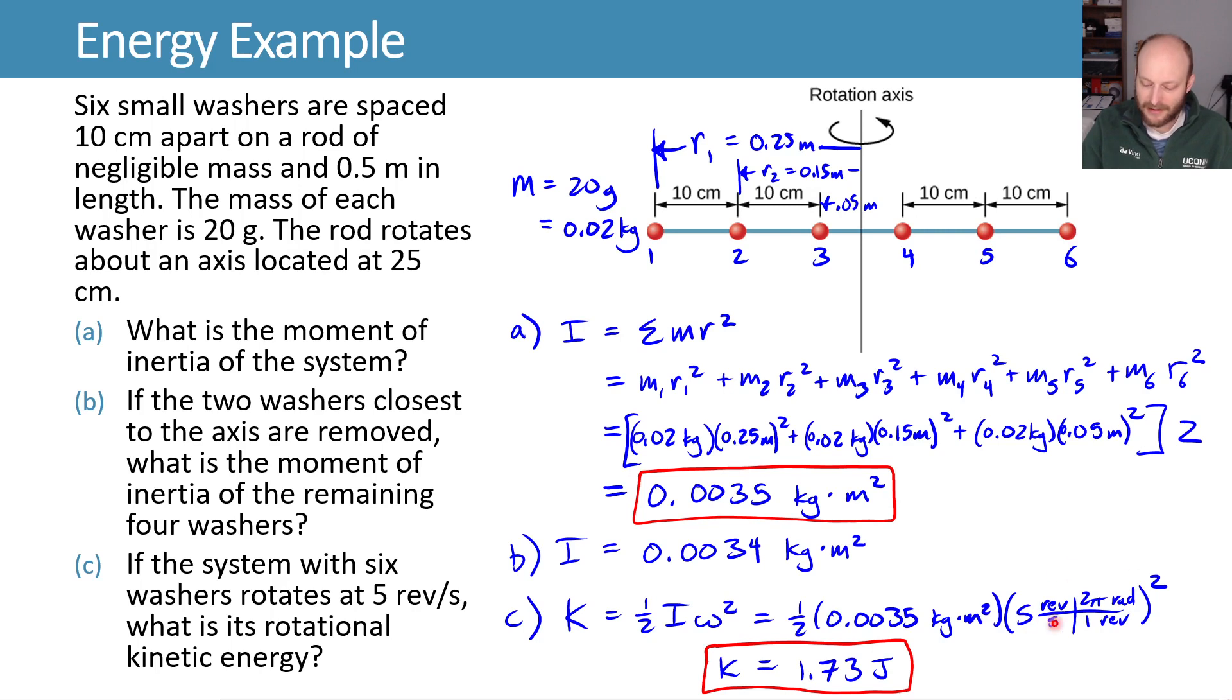I'll re-emphasize this. Whenever you're plugging in anything into this V equals R omega or K equals one-half I omega squared, we always want to use radians as we plug stuff in because that's how we built a lot of this information and it'll make your life easier.